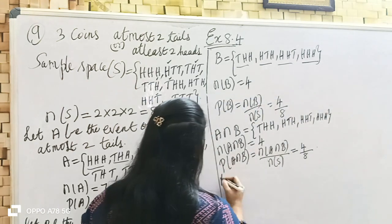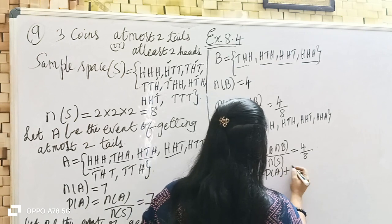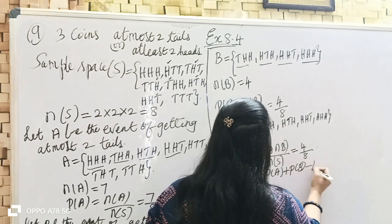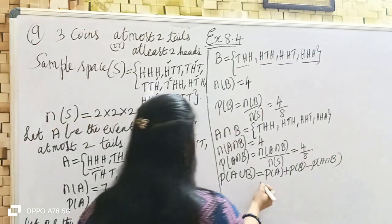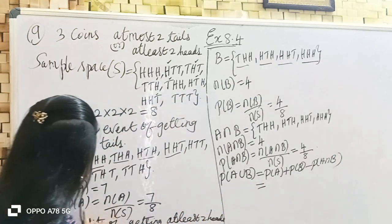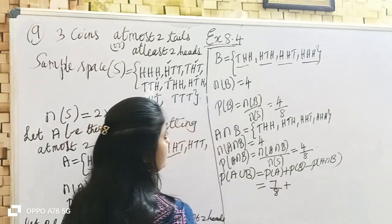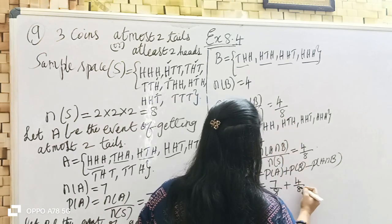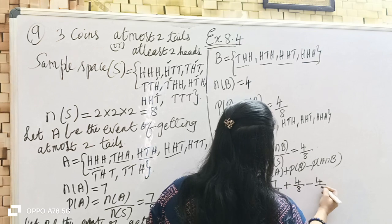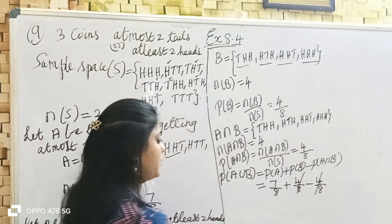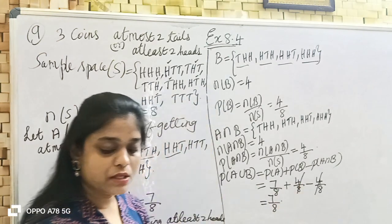The Addition Theorem is: P(A union B) = P(A) + P(B) − P(A intersection B). Applying it: P(A) = 7/8, P(B) = 4/8, minus P(A intersection B) = 4/8. So the final answer is 7/8. This is a very important sum.